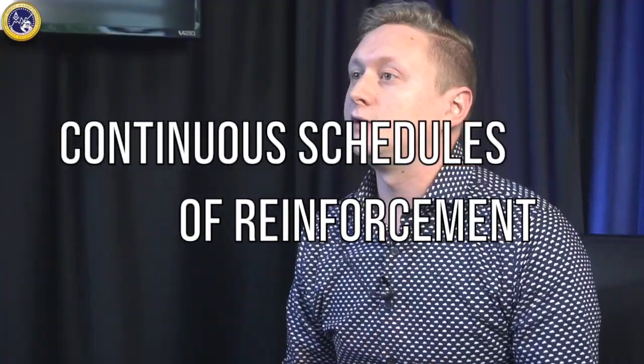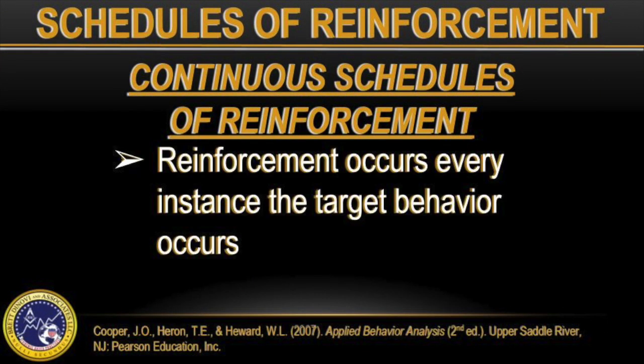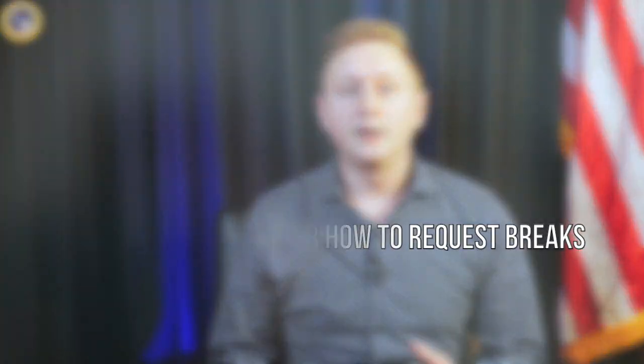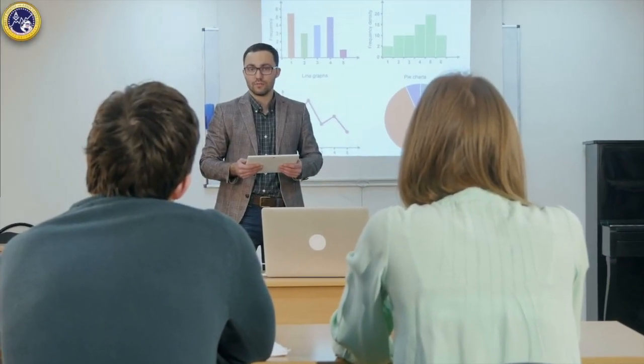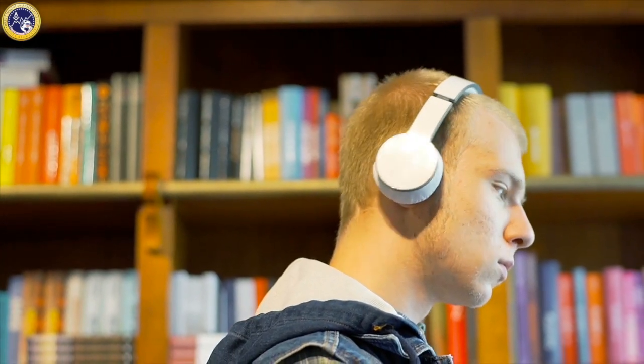When we talk about schedules of reinforcement, there are two broad terms that encompass the main schedules that we use. The first one being continuous schedules of reinforcement. A continuous schedule of reinforcement means that every time the target behavior occurs, we're going to reinforce that behavior. For example, if we're trying to teach a learner how to request breaks in a classroom, every single time they say 'I'd like to take a break,' we're going to let them take that break regardless of whether they're in the middle of a lesson or engaging in other target behavior — as long as they do what was asked, they get that reinforcement.